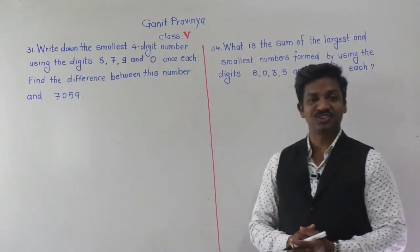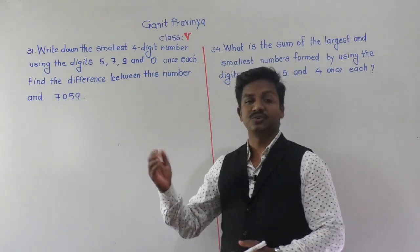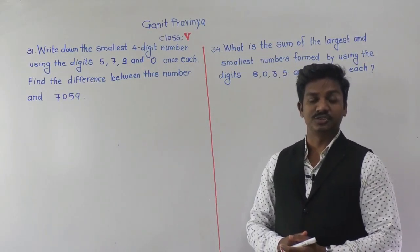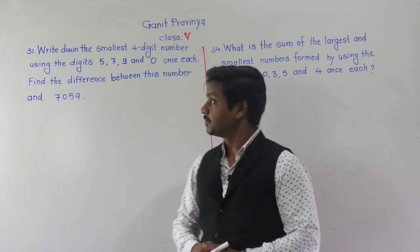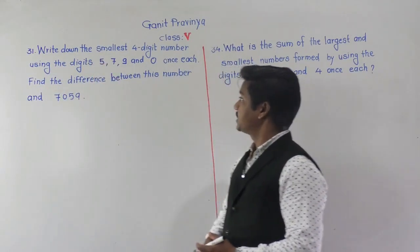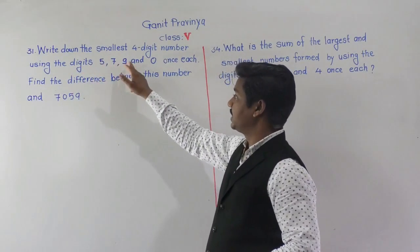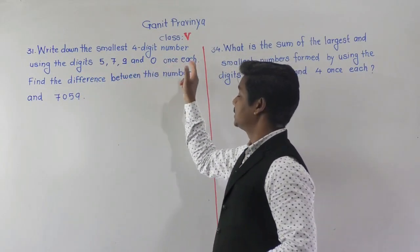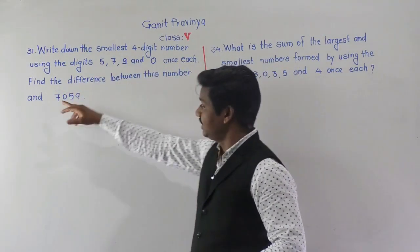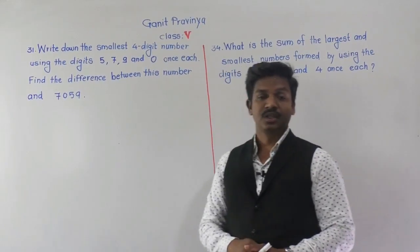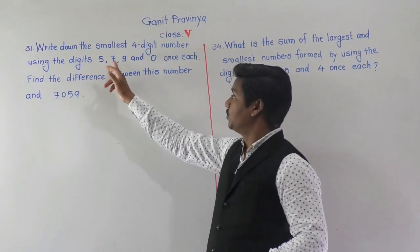Hello everyone, welcome to today's video lecture of Ganit Praveenya. In today's lecture we are going to solve the next questions from Exercise 1. Question number 31: write down the smallest four digit number using the digits 5, 7, 9 and 0 once each, then find the difference between this number and 7059.